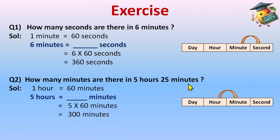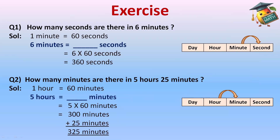5 multiplied by 60 equals 300 minutes. We already have 25 minutes, so we add: 300 plus 25 equals 325 minutes in total. Therefore, 5 hours and 25 minutes equals 325 minutes in total.